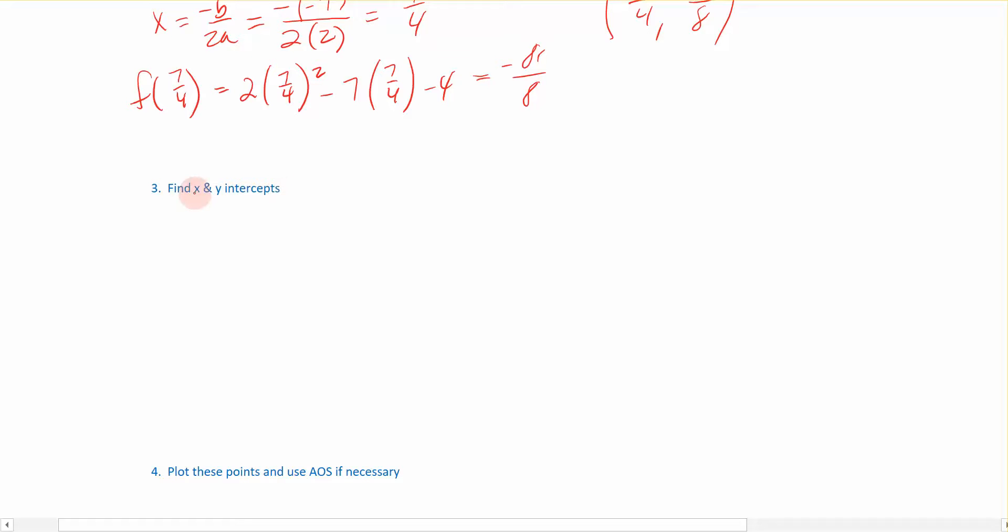Remember that if I want to locate what the x intercepts are in a function, that's when I set the function equal to zero and solve. You've been doing that since you started solving quadratic equations in Algebra 1. That was one of the reasons why you did it, to find where these x intercepts were. We're going to take our function, which was 2x² - 7x - 4, set it equal to zero and solve.